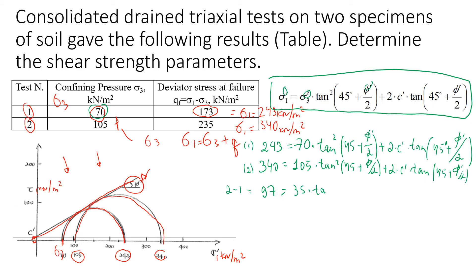Times tangent squared of (45 plus friction angle divided by 2). Why did I do that? So that I can get rid of this component here because it's the same in both equations. Now we can easily solve this simple equation.